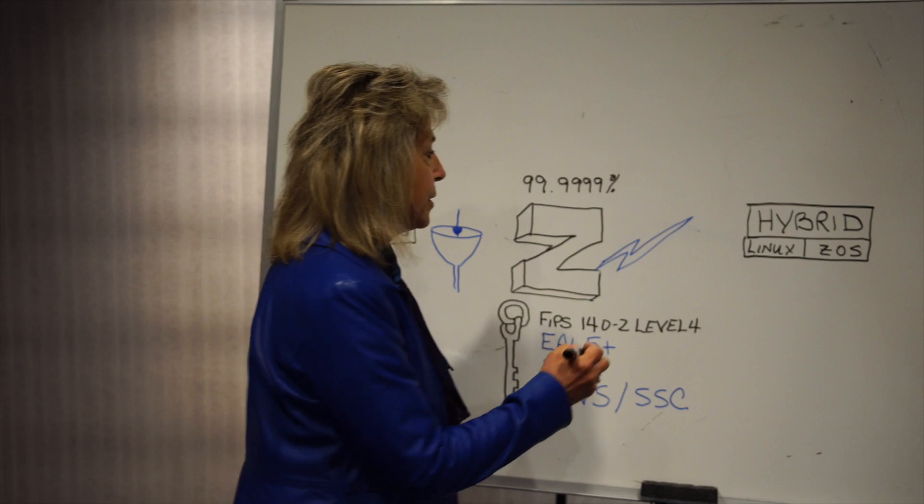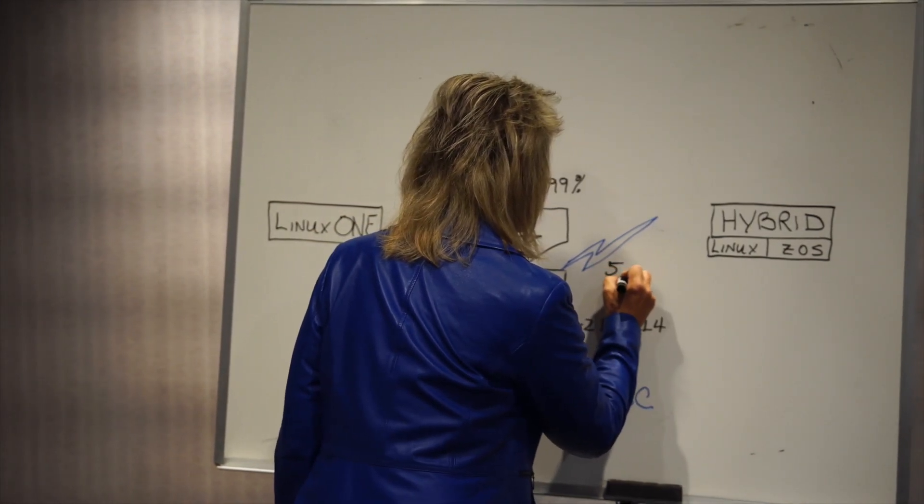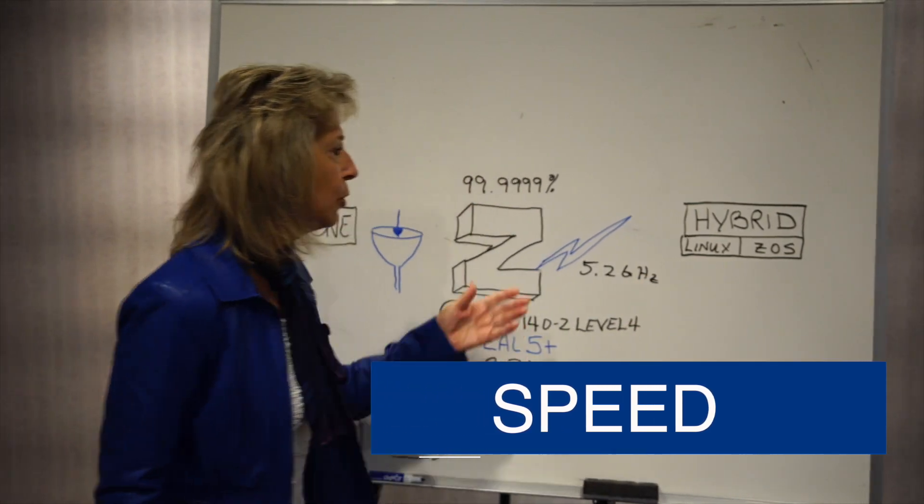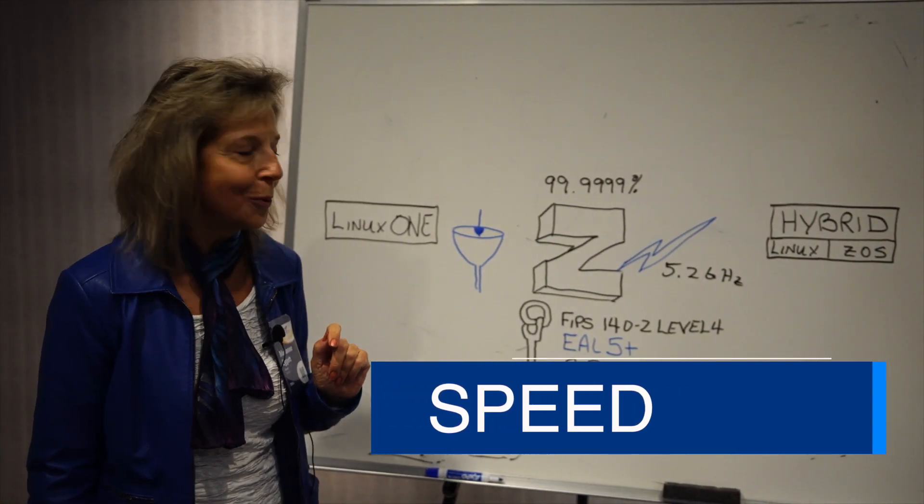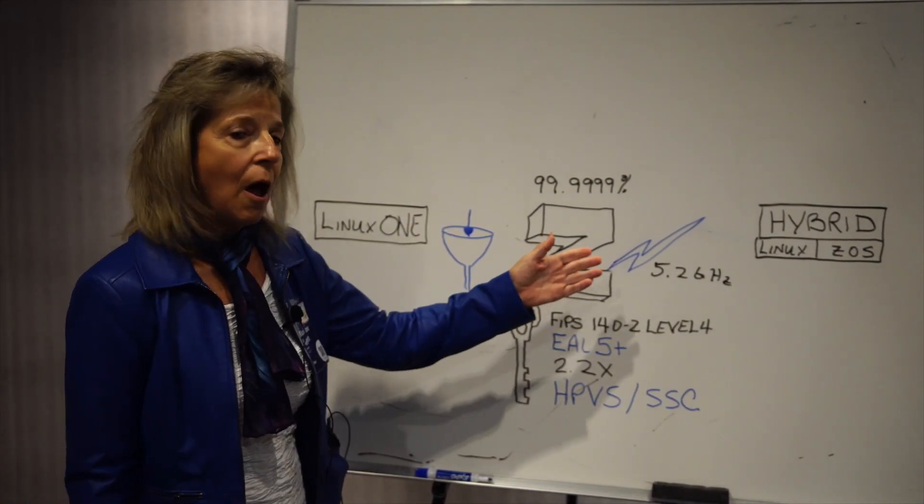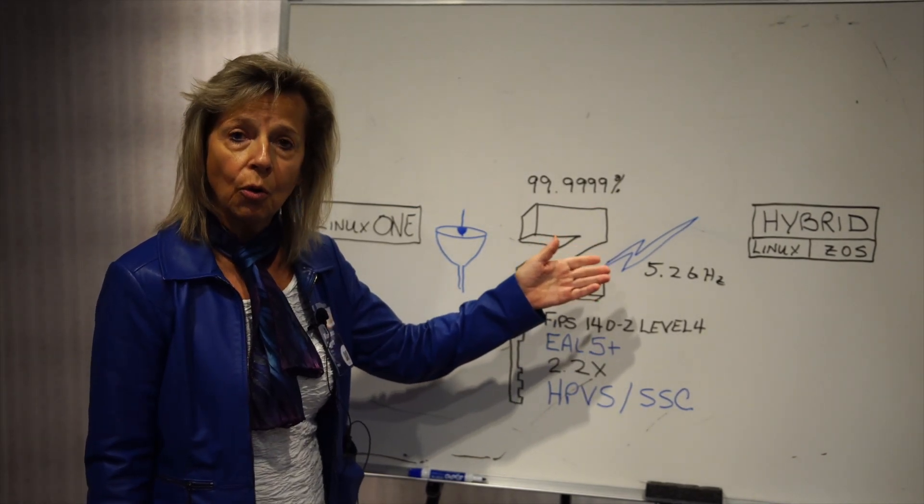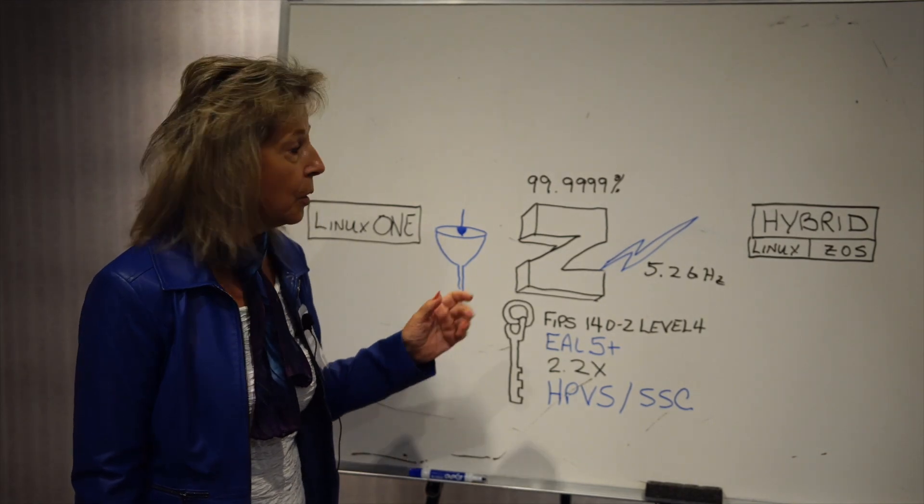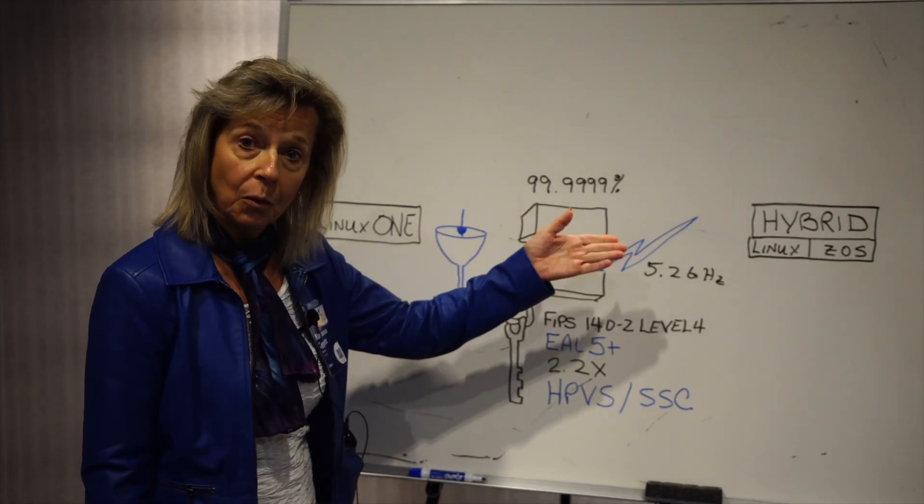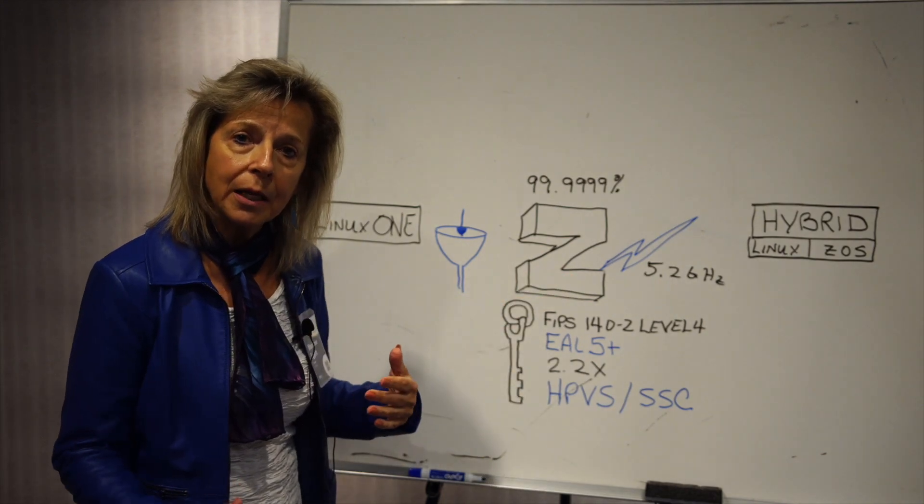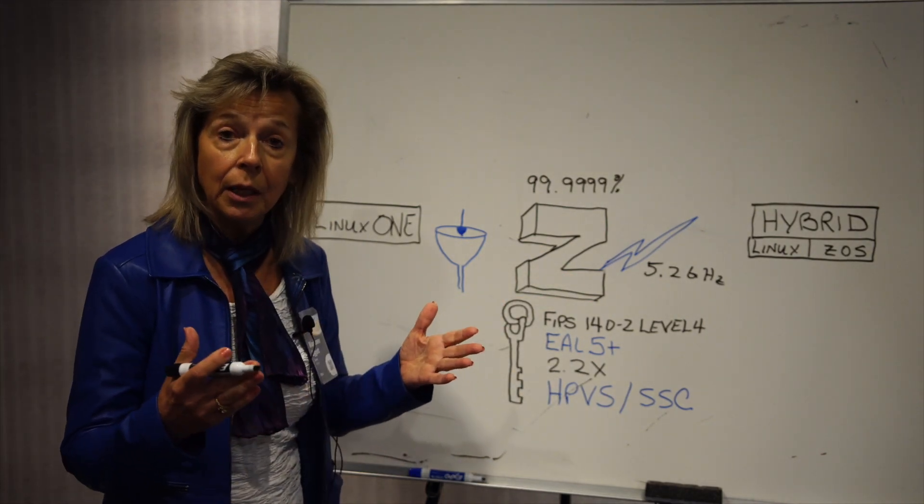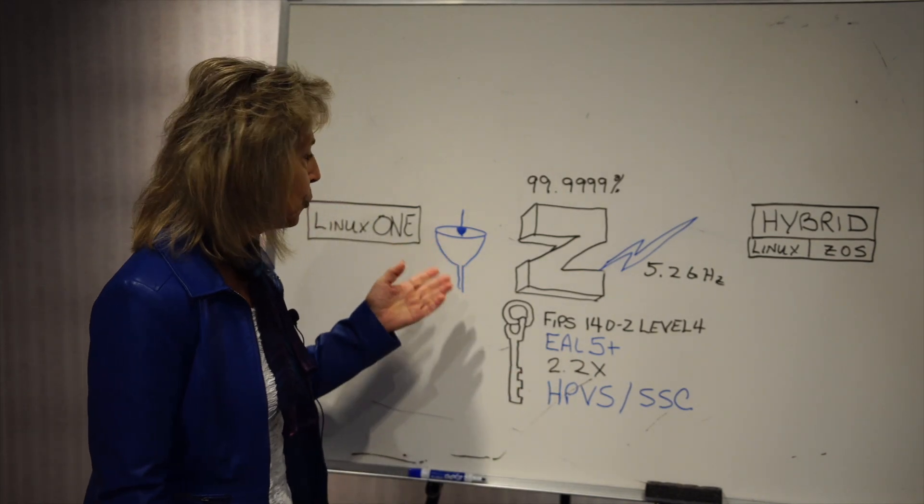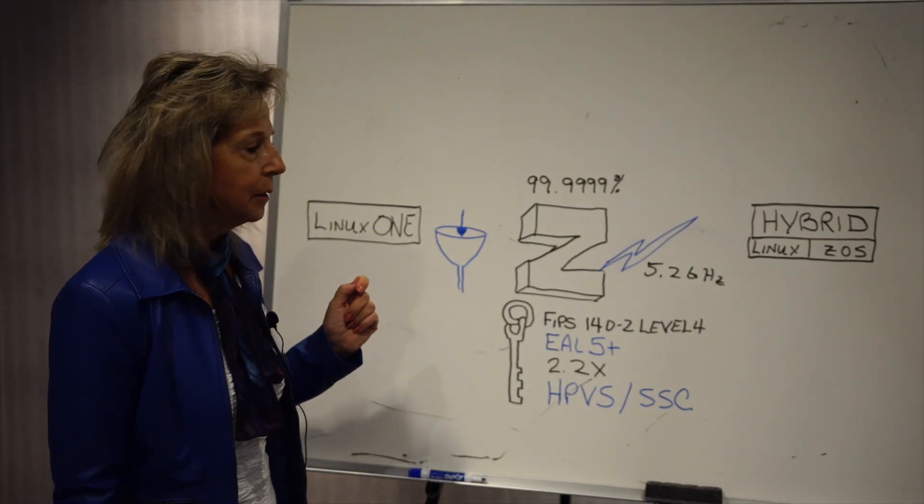Second thing I'm going to talk about is 5.2 gigahertz speed of the core and that's our lightning bolt here. So there is no other core in the industry that is at this speed. IBM Z with this type of core speed provides extremely excellent performance and throughput and we will be talking about that in a little bit.